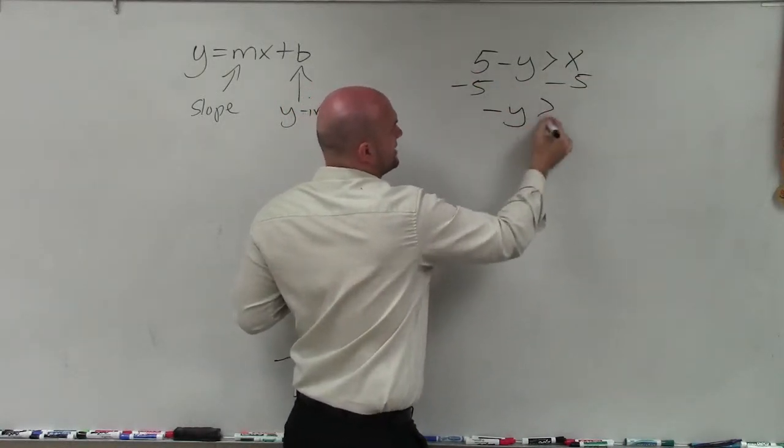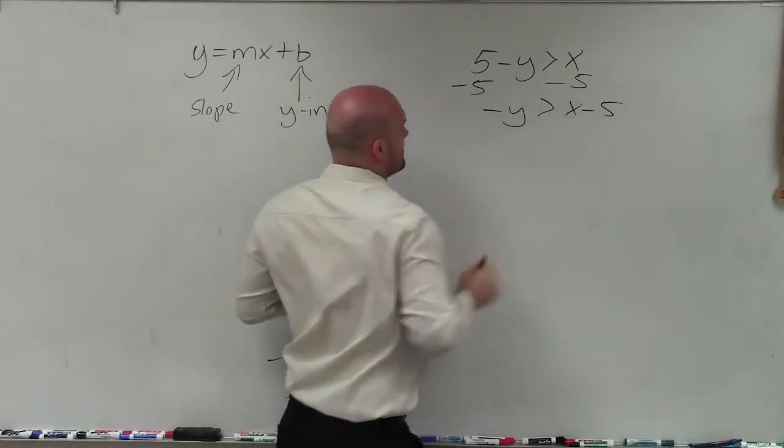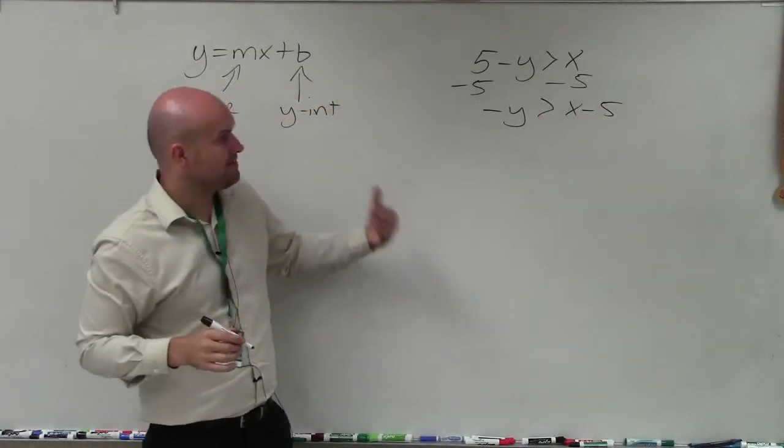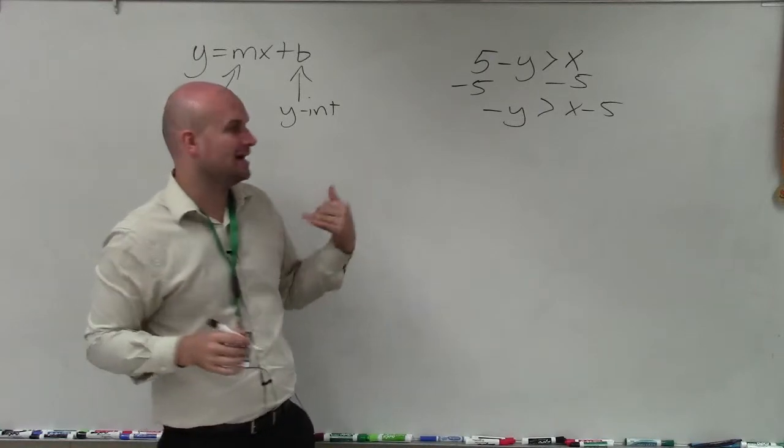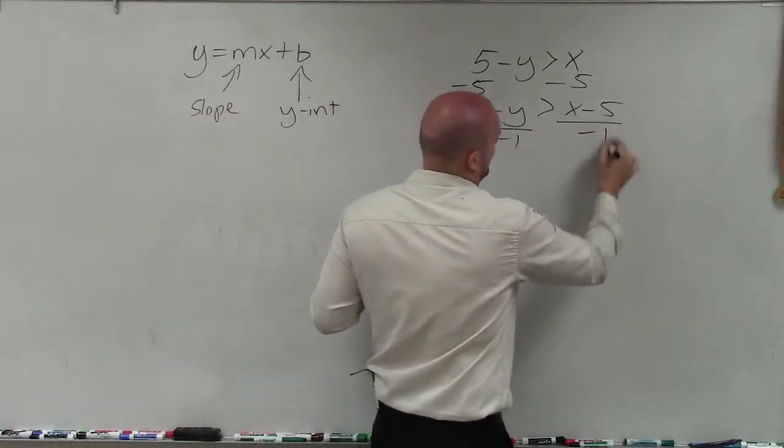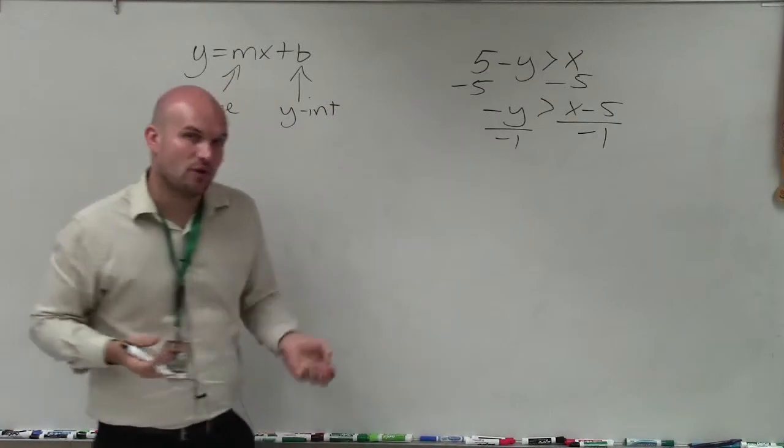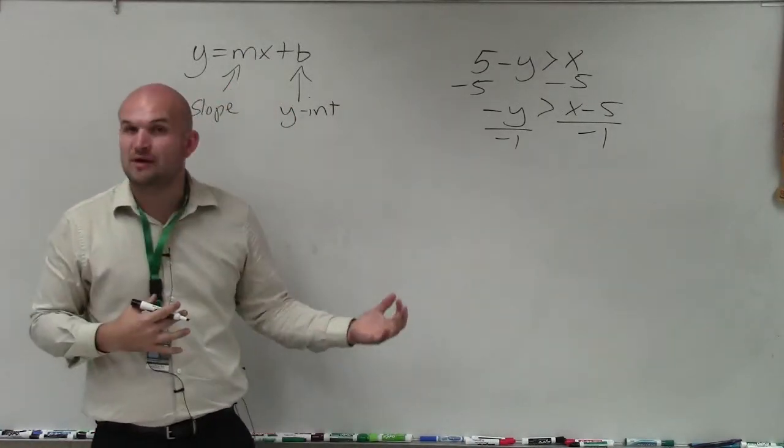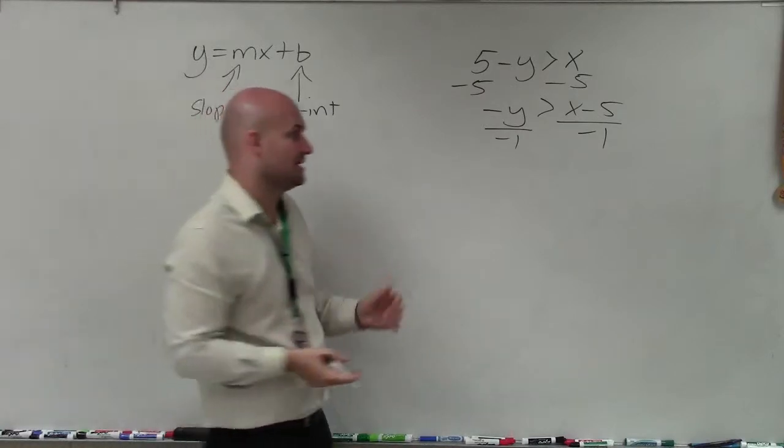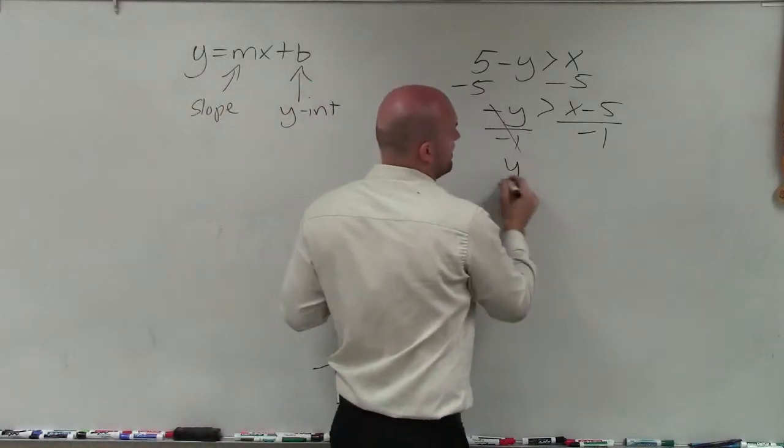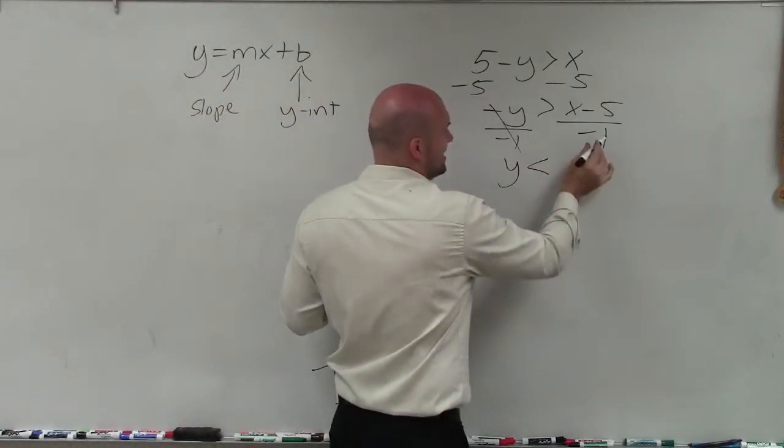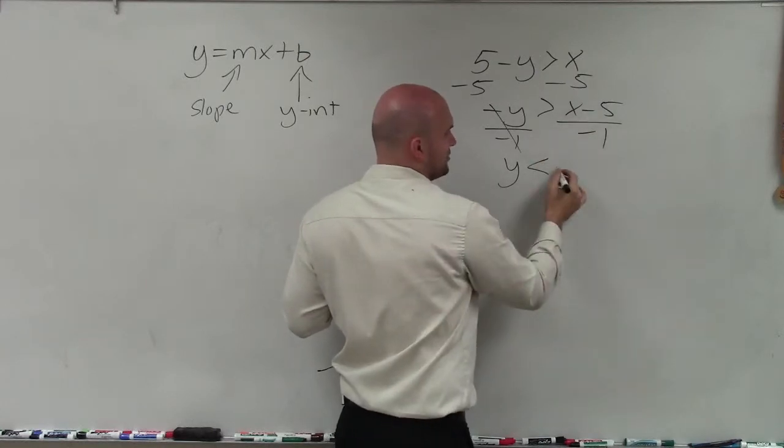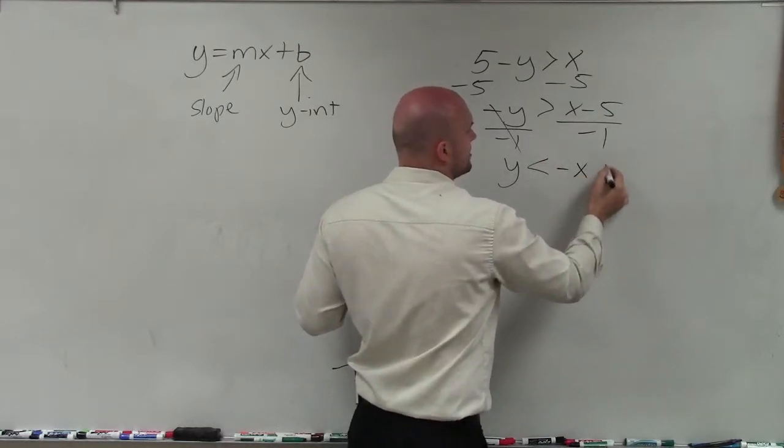Now I have negative y is greater than x minus 5. Now to undo multiplying my variable by negative 1, I need to divide by negative 1. Now remember, when we are solving inequalities, whenever we multiply and divide by a negative number on both sides, we have to flip the sign. That's going to be the same case. I now have a positive y is now less than negative x plus 5.